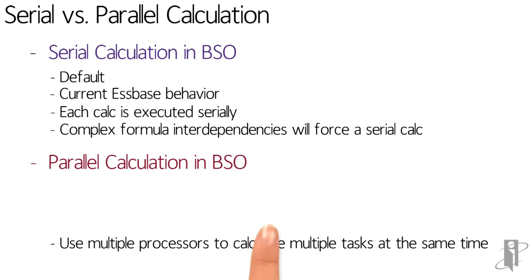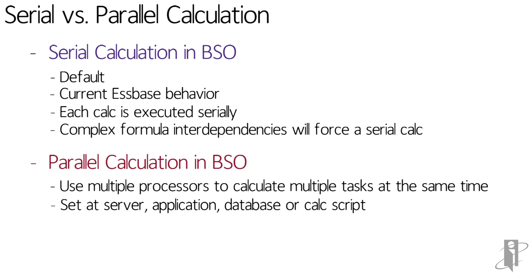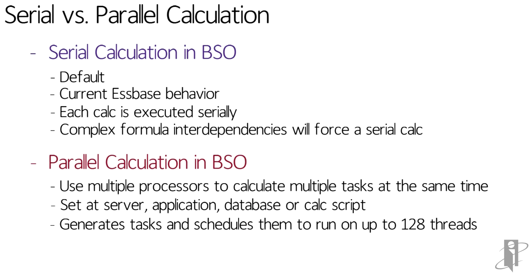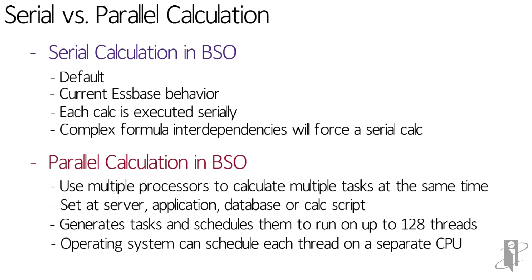Parallel means to use multiple processors, multiple CPUs, launch multiple tasks at the same time. Now technically we can't tell it to go use eight CPUs. What we can do is say launch eight simultaneous activities, or in the computer world we call them threads. Then it decides if those eight threads will each go one per CPU, or maybe one of the CPUs isn't doing much and it'll launch two of the threads on that CPU. The operating system controls which CPUs and which cores on the CPUs handle the various threads that we're launching.